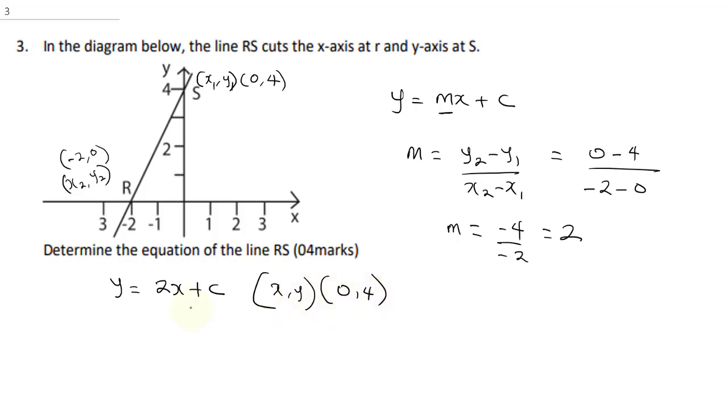So, from here, our y is 4, and x is 0. So, we are going to put this into the equation. So, this will be 4 is equal to 2 times 0 plus c. And from here, you can get your c as 4. So, therefore, you can represent your equation to be y equal to 2x plus 4. So, this is the equation of your line.